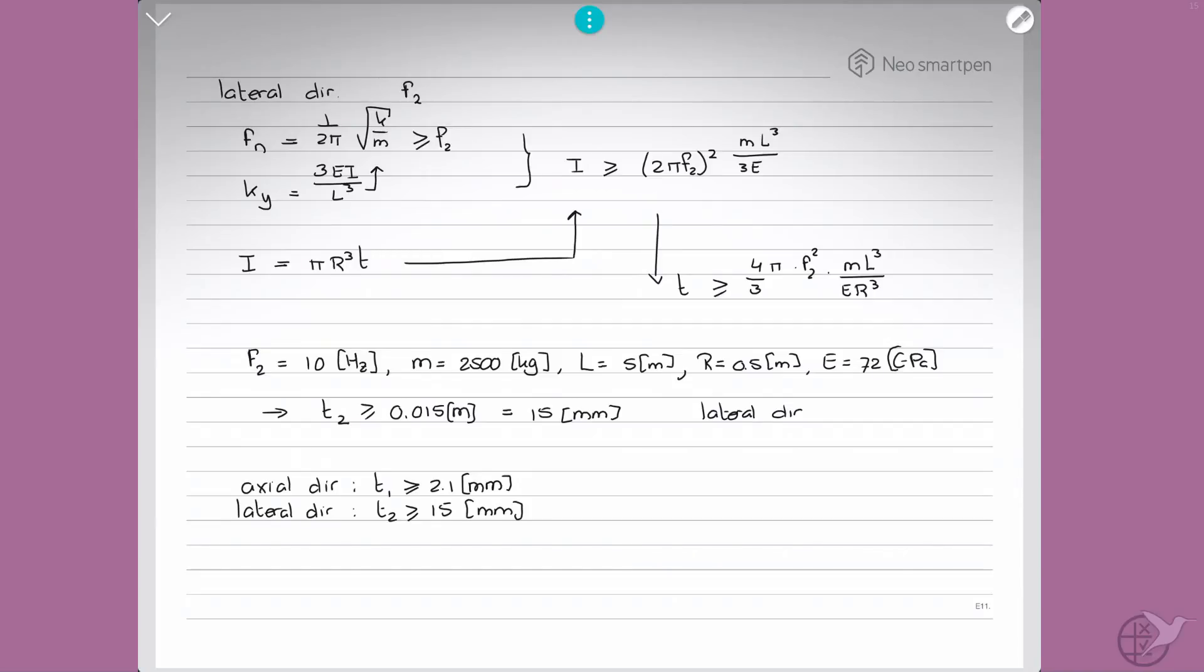But which one is governing? The largest one here is governing, as that is the only one that meets both requirements. The axial one, t1 is 2.1 millimeters, would actually fail the lateral direction requirements. So our minimum required wall thickness tmin is equal to 15 millimeters. So that's the first half of our problem solved.